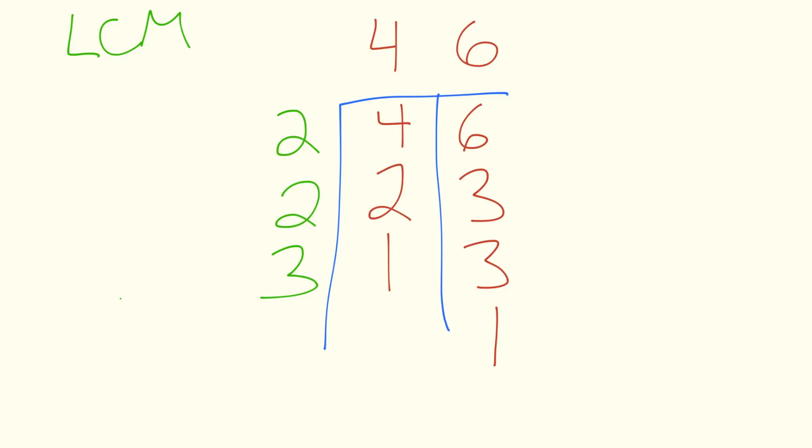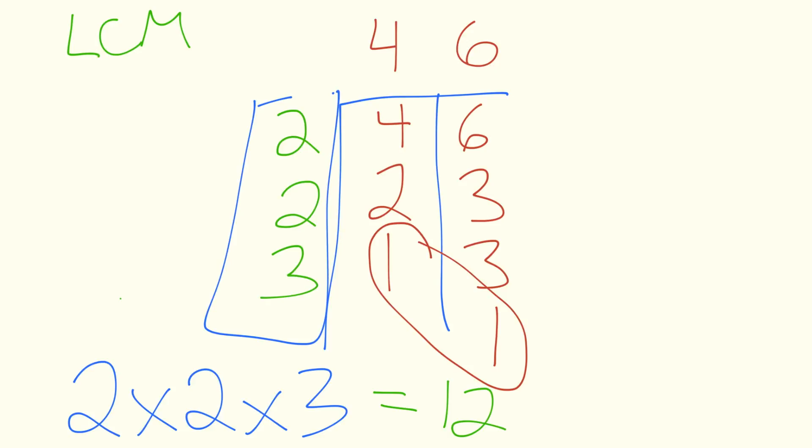This technique stops when you have 1s at the bottom of all of your columns, which is what we have here. Now we take a look at the numbers that we wrote outside, and to find the LCM, you multiply those numbers together. So you have 2 times 2 times 3, and that equals 12, and that is the LCM of 4 and 6.